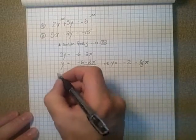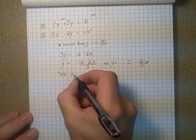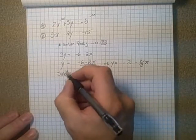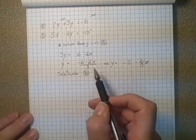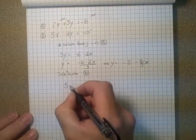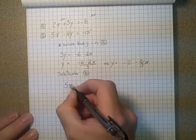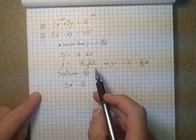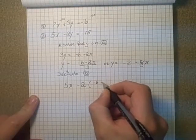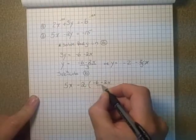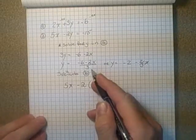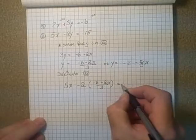Once we have the value for y, we then have to sub it into B, sub y into B. So we know that this value here, we're going to sub it in in equation B. So we know that 5x is there, minus 2. And now we have to sub in the expressions here. So I'm going to sub in this part here. So this is going to be negative 6 minus 2x on top over 3. And that was our value that we had for y, and that's going to equal negative 15.